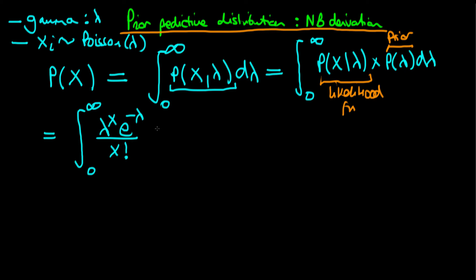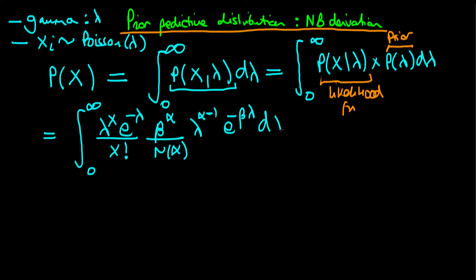This is multiplied by the gamma prior, which is beta to the power alpha divided through by the gamma function of alpha, times lambda to the power alpha minus 1, times e to the power minus beta times lambda, integrated with respect to lambda.